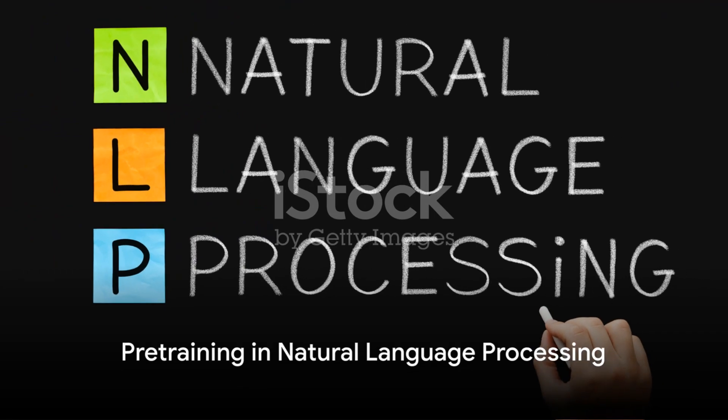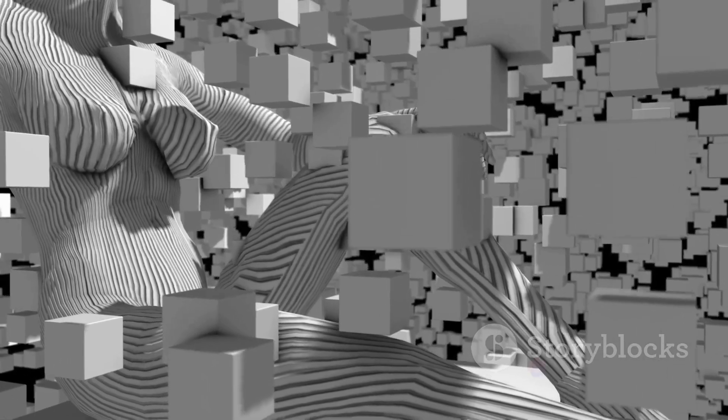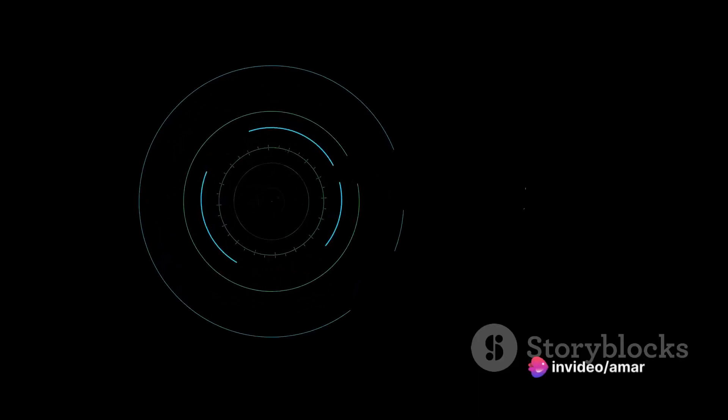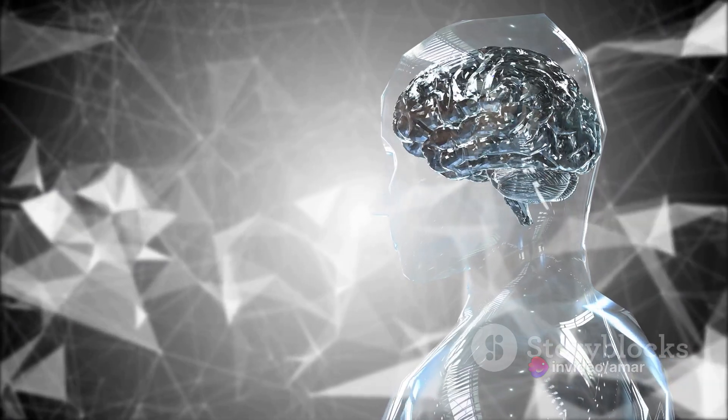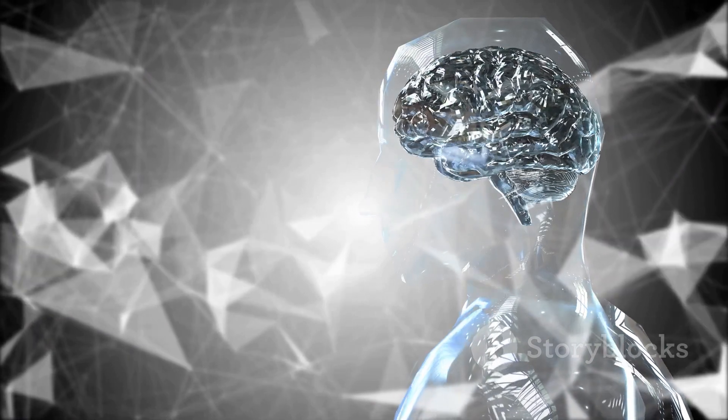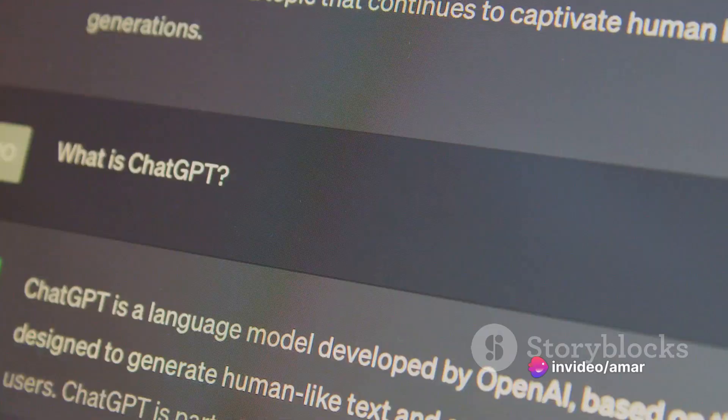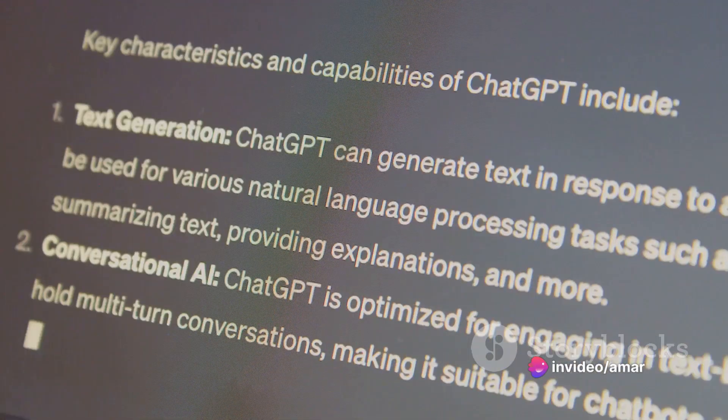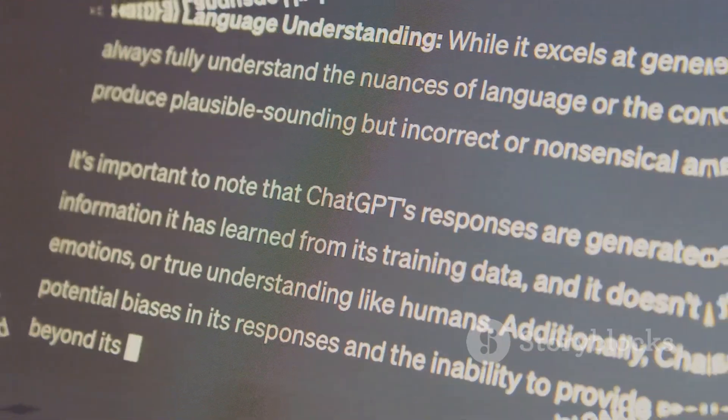Consider the field of natural language processing, where pre-training has made significant strides. The GPT-3 model, developed by OpenAI, is a prime example. The model was pre-trained on a vast corpus of text data from the Internet before being fine-tuned for specific tasks such as translation, question answering, or even poetry composition. This pre-training allowed GPT-3 to generate human-like text, demonstrating the power of pre-training.